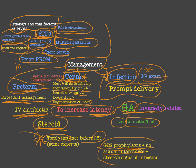To summarize pre-labor rupture of membrane: we covered definitions, preterm and term rupture, complications, etiology, background, history, physical examination, investigations (nitrazine test, ferning test, ultrasound, genital tract swab, fetal and maternal well-being), and management for term, preterm, infection, and PV examination. We also discussed amniotic fluid functions and sources, and factors determining latency. Thank you very much for watching.